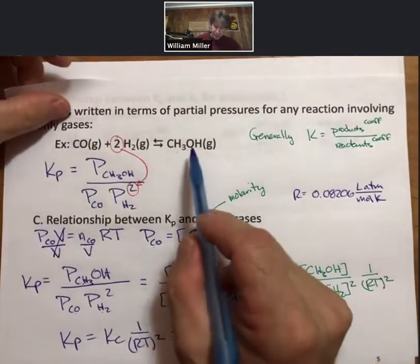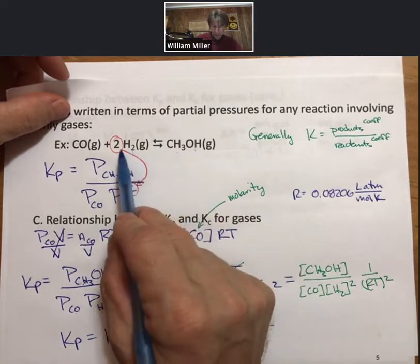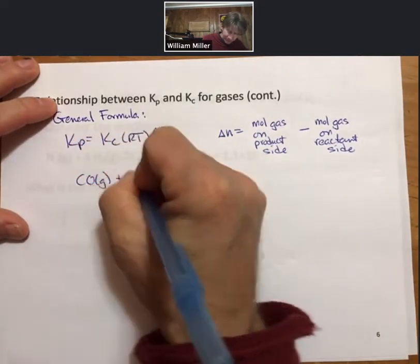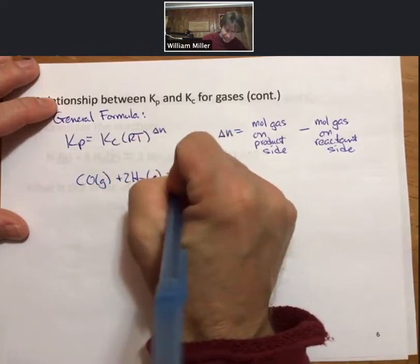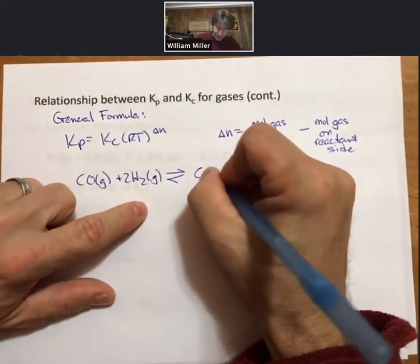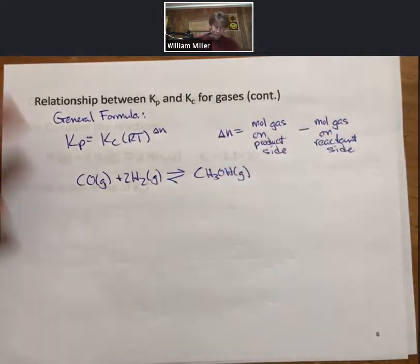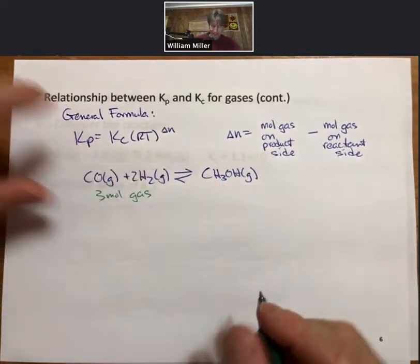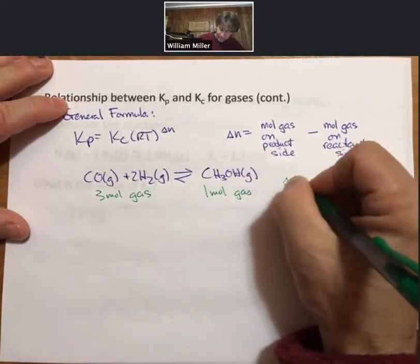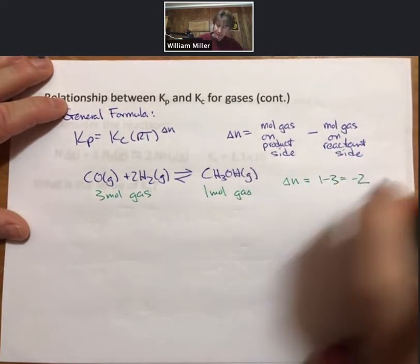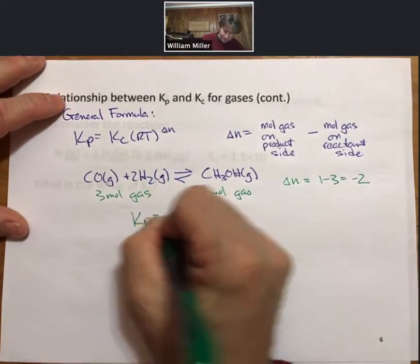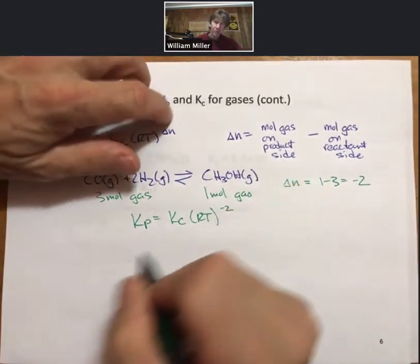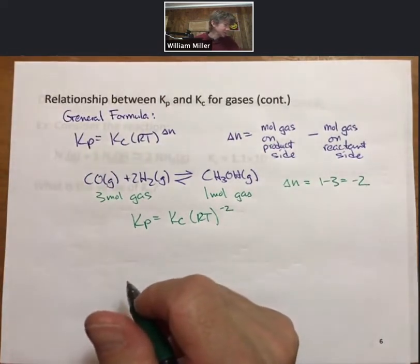We can see that we've got one mole of gas on the product side, we've got one, two, three moles of gas. And let's just write that out. Product is methanol gas, so we've got three moles of gas on the reactant side, we've got one mole of gas on the product side. So delta N equals one minus three equals minus two for this reaction. Kp equals Kc times RT to the minus two, which is exactly the result we got when we did it before. Good.